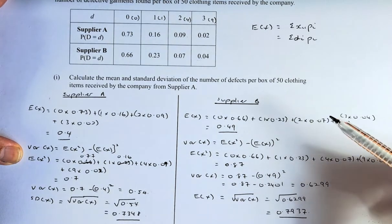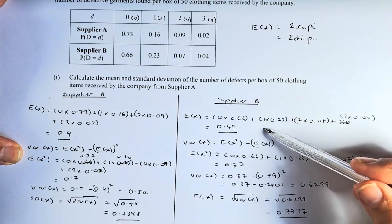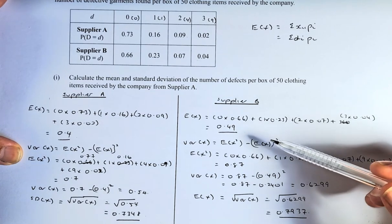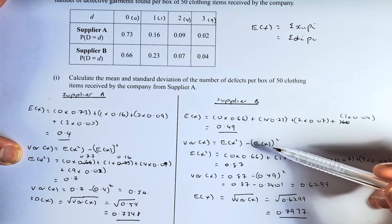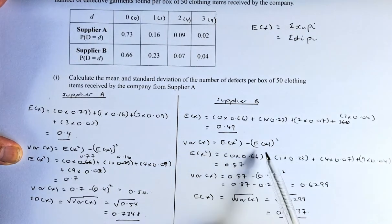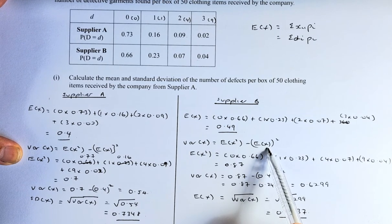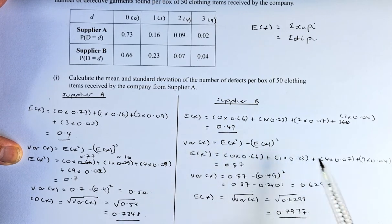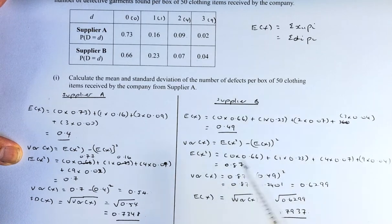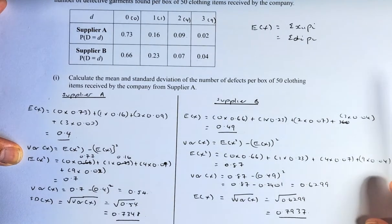Now we're going to calculate the standard deviation for Supplier B. We already calculated the mean for Supplier B. We need to do the same thing for the standard deviation. The formula is again there. This is actually the square of 0.49, which we'll substitute later. To get E(X²), the same thing.